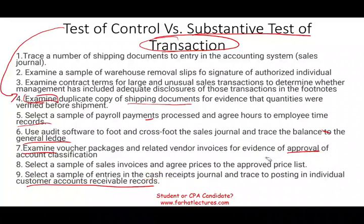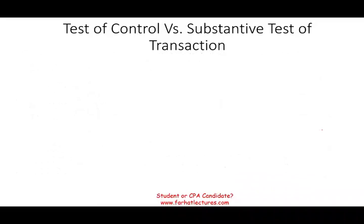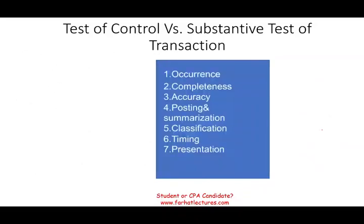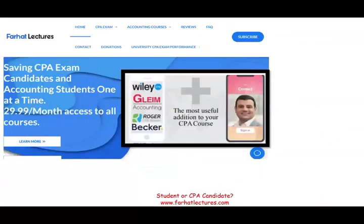This type of exercise is important to study for the exam because it covers all audit-related objectives: occurrence, completeness, accuracy, posting and summarization, classification, timing, and presentation. We didn't have a timing example, but you need to know them all — timing means the transaction is recorded on the correct date. Good luck, study hard, and stay safe.